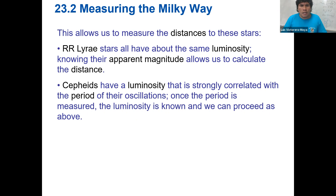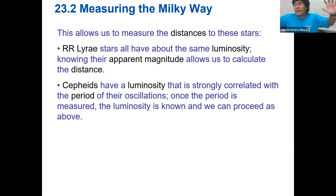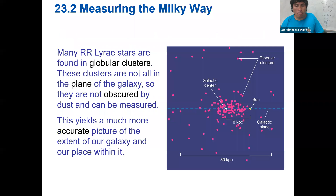For Lyra and Cepheid variables, we can know their apparent and absolute magnitudes. Because of the variation, we can see that difference and calculate the distance between us and those stars. Because we know they can be very far from our position, we can use them to estimate distances not just within the Milky Way but also beyond. For example, how do we measure the distance to the Andromeda galaxy? By using Cepheid variables in the Andromeda galaxy.